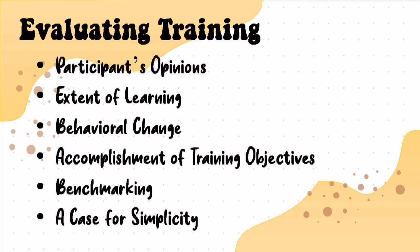Fourth is achievement of training objectives. Another approach to evaluating training programs involves determining the extent to which stated objectives have been achieved. There are specific goals that may be accomplished, and this will be the basis for whether anything was accomplished through training. For example, if a new employee is expected to produce a certain quota after the training phase, whether or not he reaches it will determine how effective the training was and whether the company benefits from investing in that employee's development.